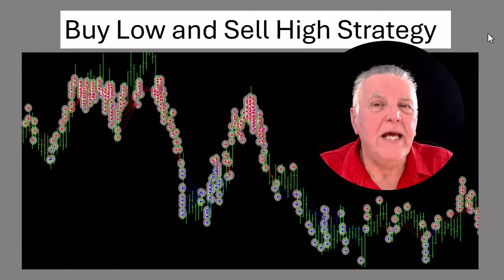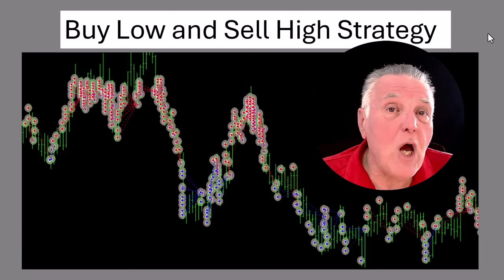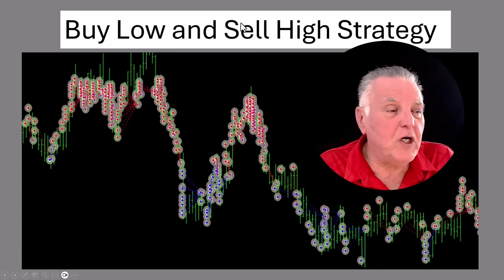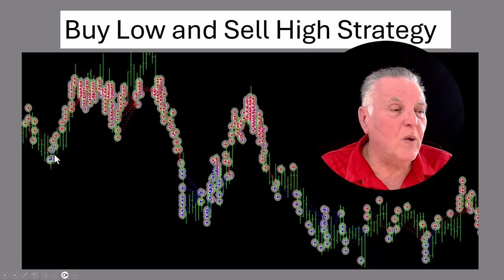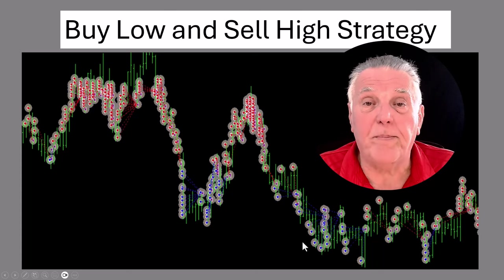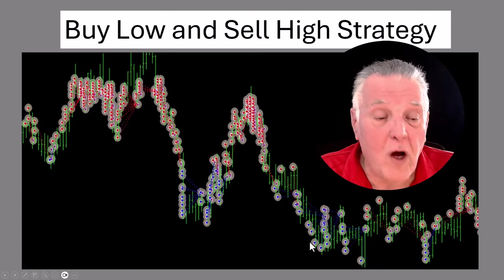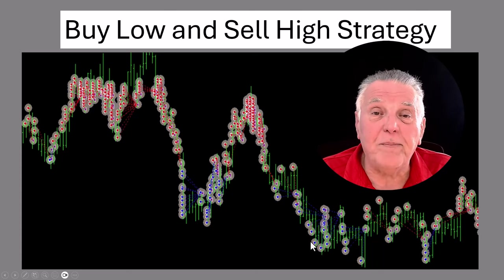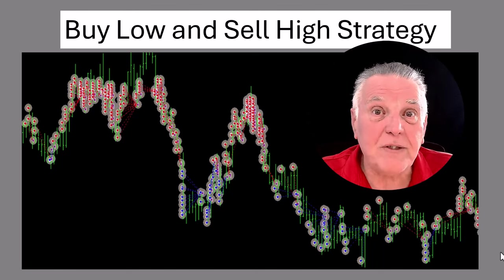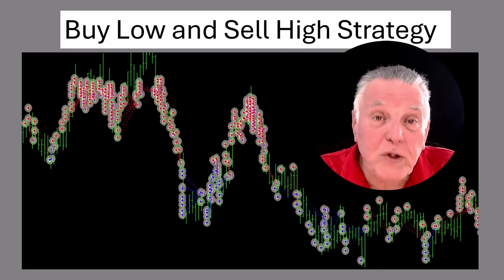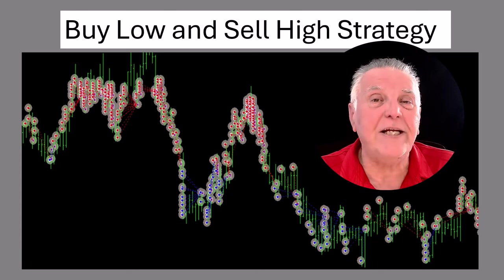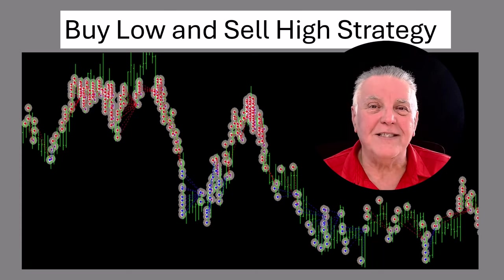The whole idea behind the Bell strategy is to buy low and sell high. As you can see on the chart here, the buys are all low and the sells are nice and high. Where the sells or the buys are too fast, they do close at a profit when the basket of open trades is nicely positive.